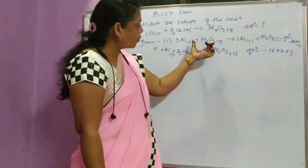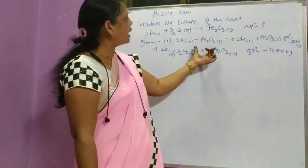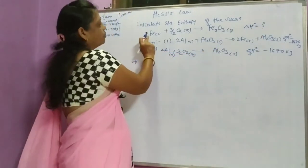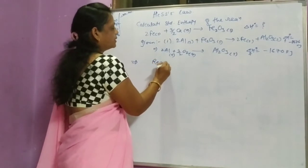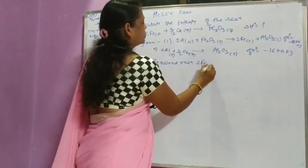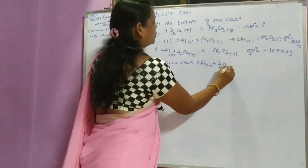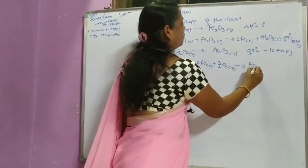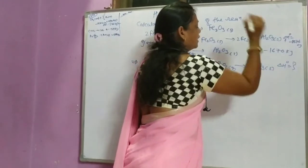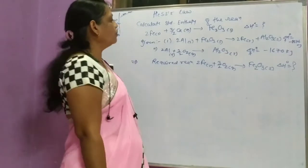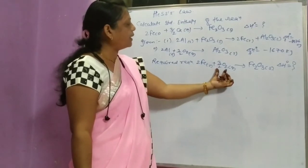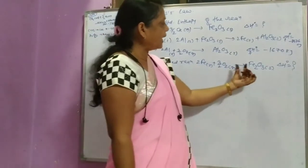From this reaction, we will have to calculate the standard enthalpy for the required reaction. Our required chemical reaction is: twice Fe solid plus 3/2 O2 gas giving Fe2O3 solid. Delta H for this reaction can be calculated. In this reaction, the reactants are Fe plus 3/2 O2 and the products are Fe2O3.